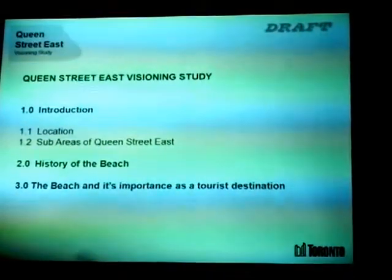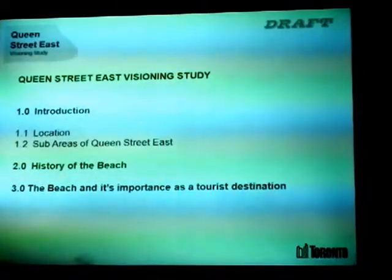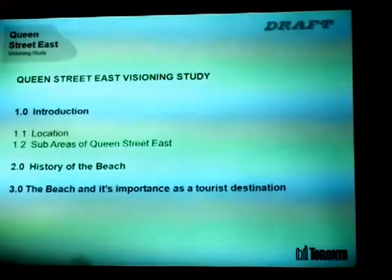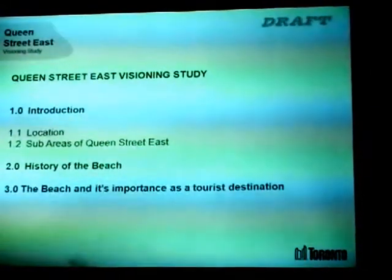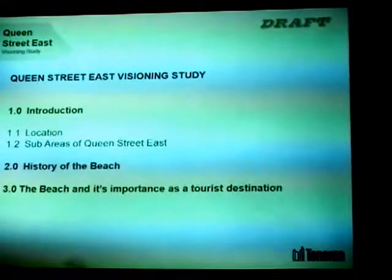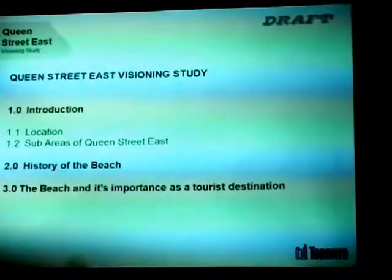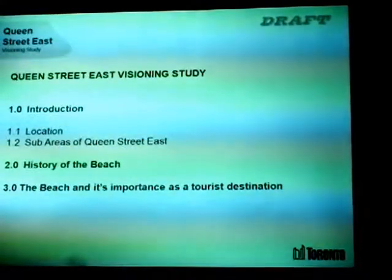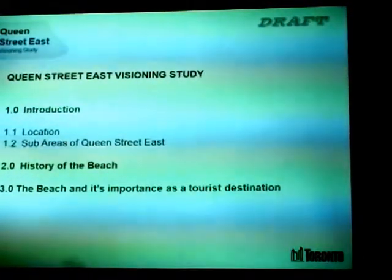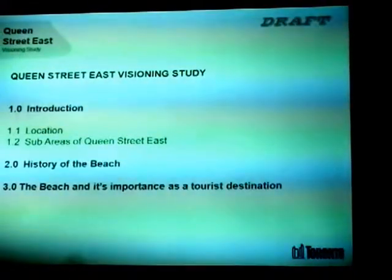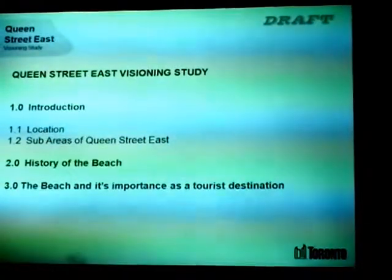This is the table of contents, and what we're trying to do is paint a picture of the area. The guidelines are really intended to be read in their entirety, and when you read them in their entirety, they paint a picture of what the guidelines perceive the Beach neighborhood to be. There's an introduction covering the history of the Beach and its importance as a tourist destination, and these sections help paint the picture of what Beach Street is today.